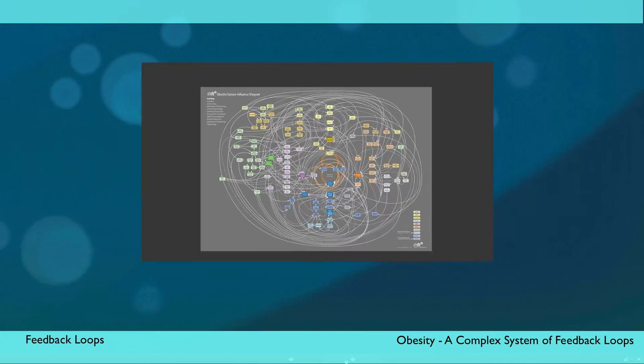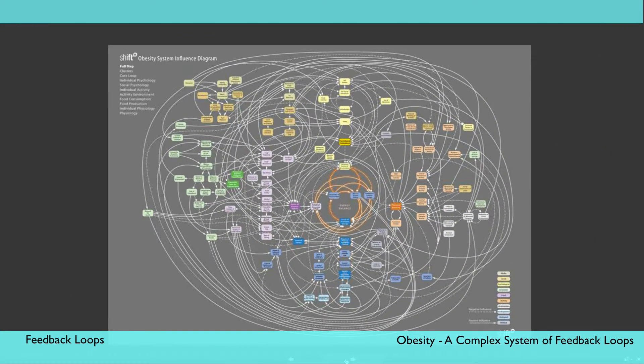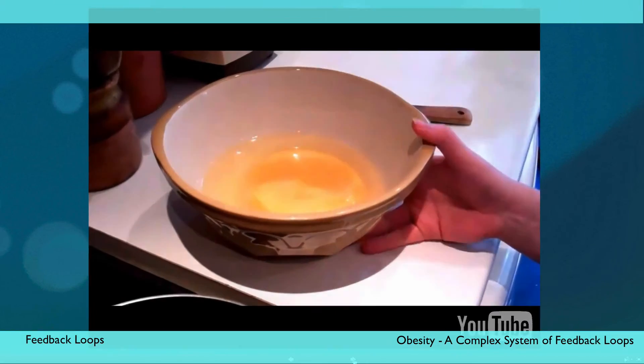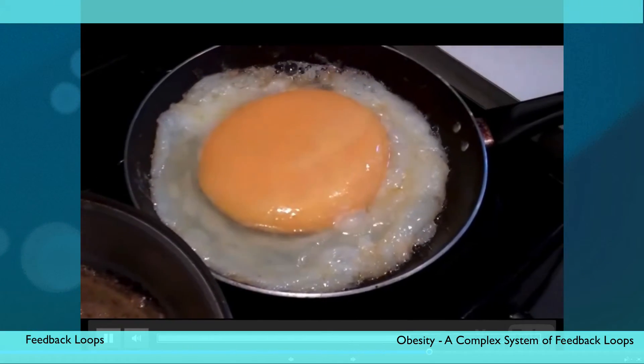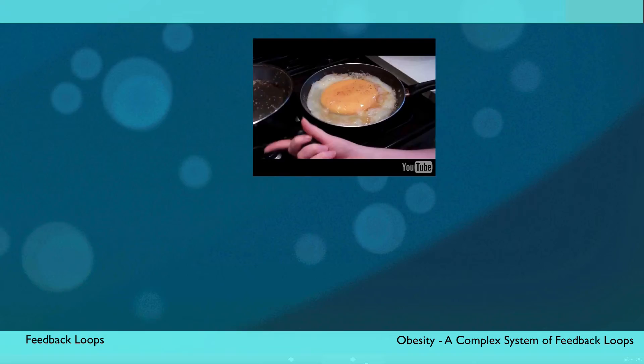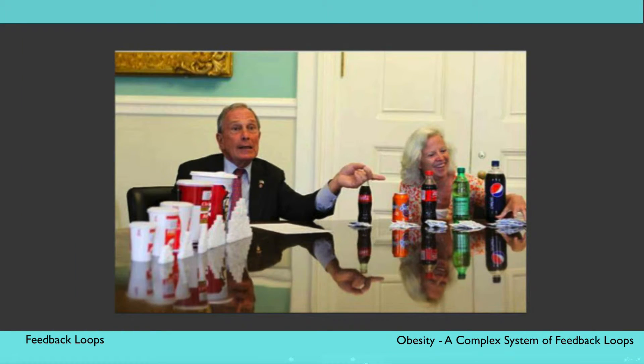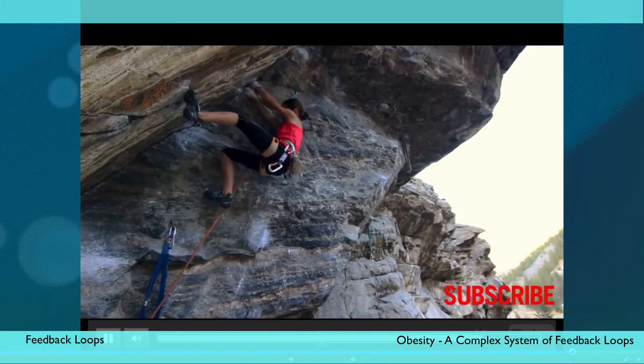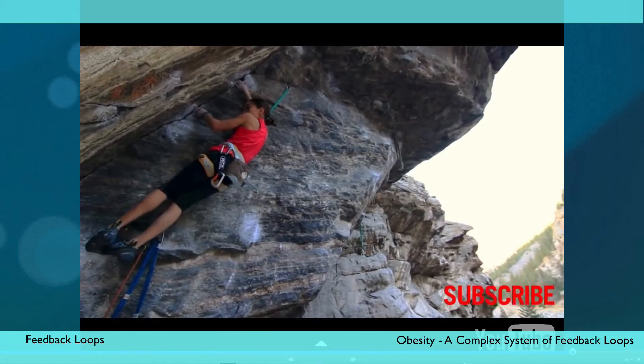For a more serious example, let's look at a system map of factors that influence obesity, created by the UK Government Office for Science. What causes obesity then, and how can we address it? Is obesity caused by the food we eat? Or the policies that govern the food industry? Or maybe our sedentary way of life, or the example we give our children?